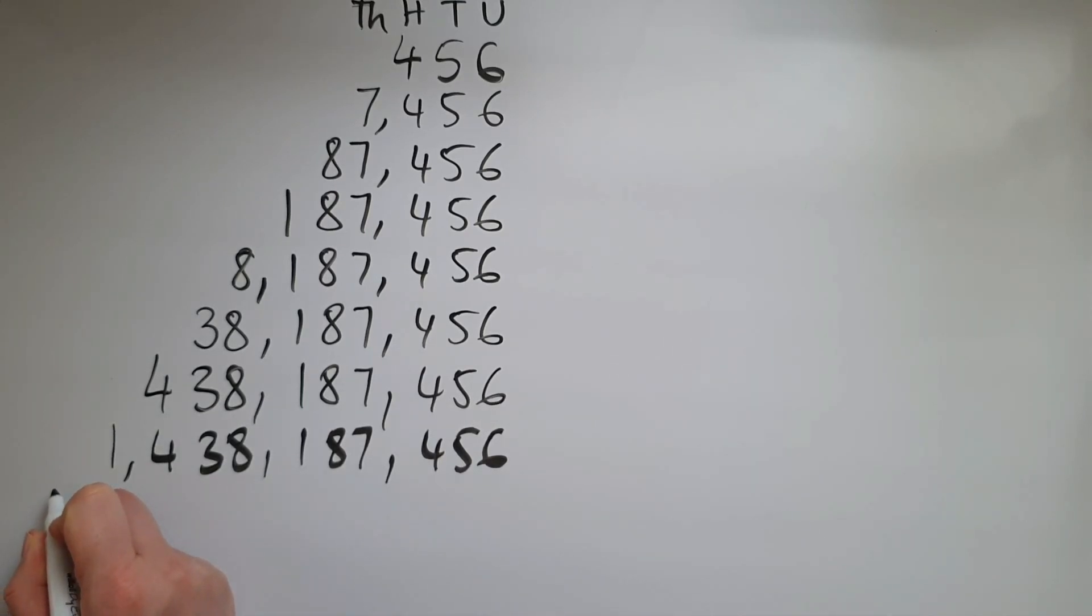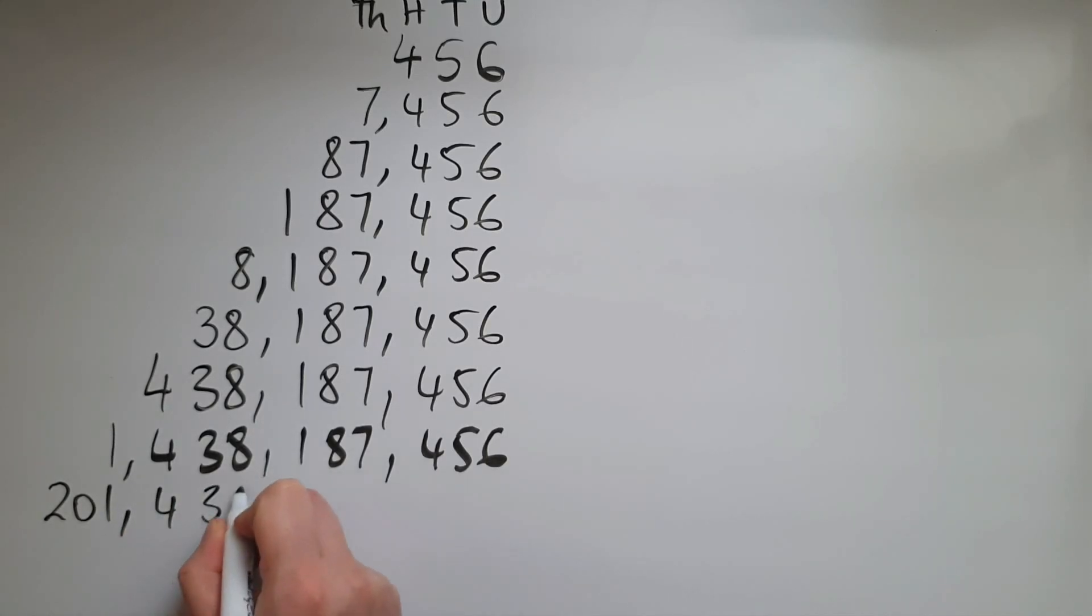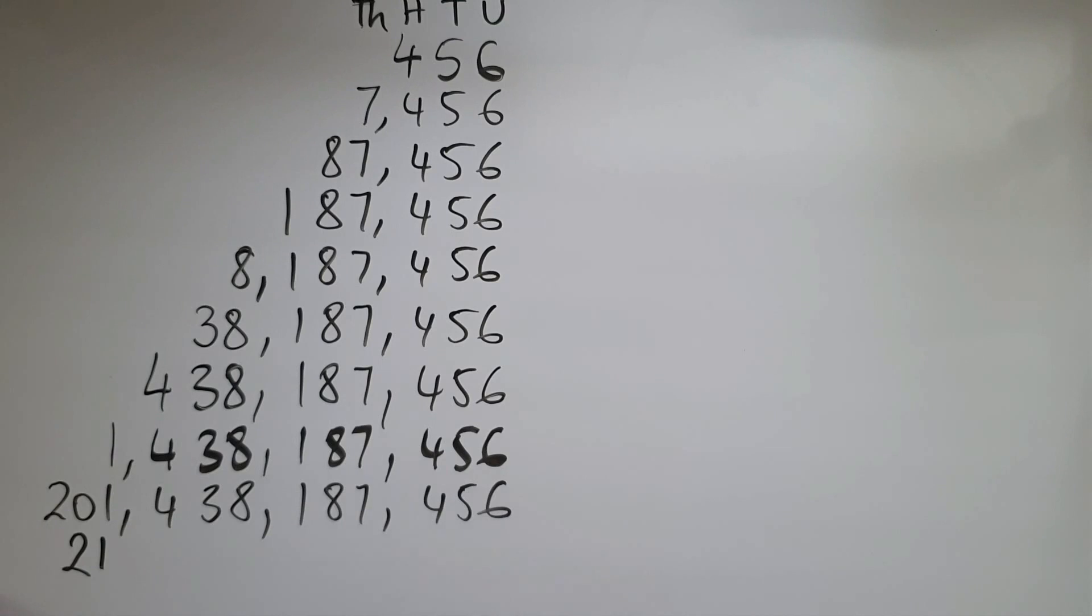And if I add two more digits in front, we've got 201,438,187,456. Now notice how I kept the zero there. Despite it having no value, it is there as a placeholder. Because if I didn't put it there, then I would end up with 21 billion, which is so different from 201 billion. So it's really important that we put the zeros as placeholders where and when needed.